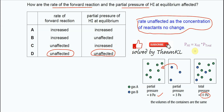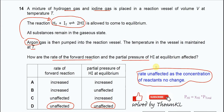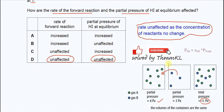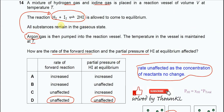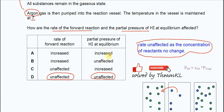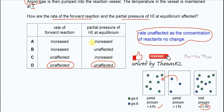Some of you might try to apply Dalton's Law from the previous question, question 13. But you have to understand: when you use Dalton's Law for this equilibrium, you need the total moles and the moles of each reactant and product to get the mole fraction, and you use the pressure before the argon was introduced. This is why the partial pressure of HI is unaffected after the argon is introduced. That's why the answer is D.